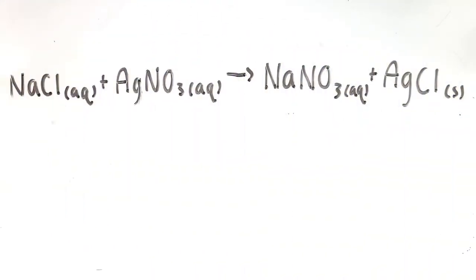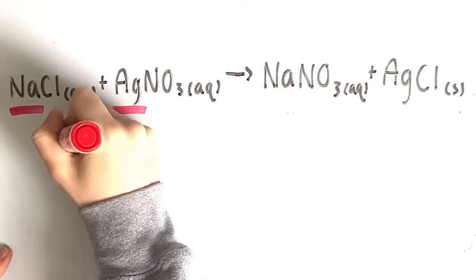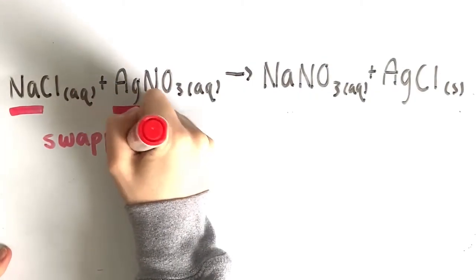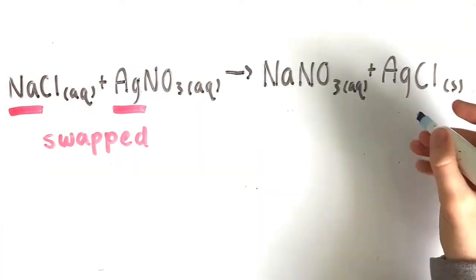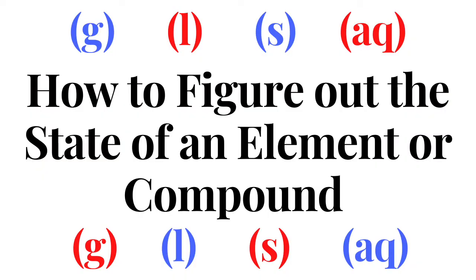An example of this reaction would be sodium chloride plus silver nitrate yields sodium nitrate plus silver chloride. As you can see, sodium and silver are our cations because they swapped places. The solid precipitate that was formed in this reaction was silver chloride. If you are not sure how we figured out the state of sodium chloride, make sure to check out our video called How to Figure Out the State of an Element or Compound.